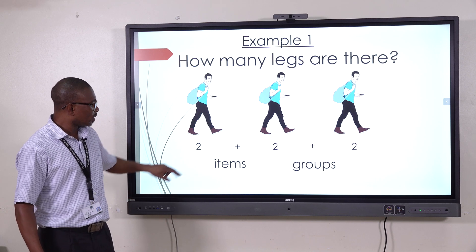The items here are the legs. So, we are talking about two items. And how many groups are there? The groups are three. We've just said that we are taking these people as our groups. So, we've got two items in those three groups. Then, we introduce our multiplication sign there. Instead of saying two, add to two, add to two, we say two multiplied by three. And in that case, then we'll get our answer as six.